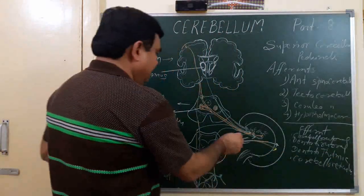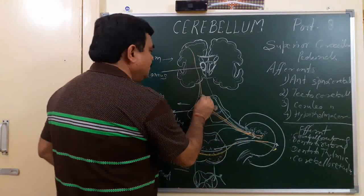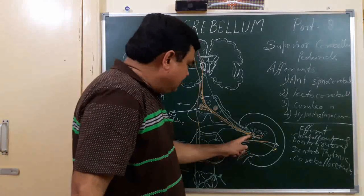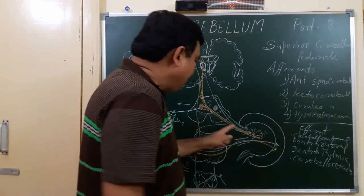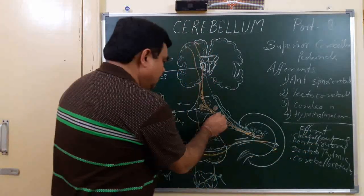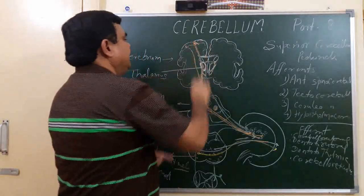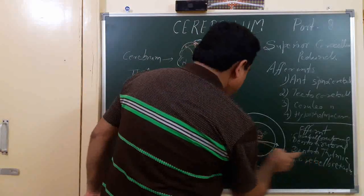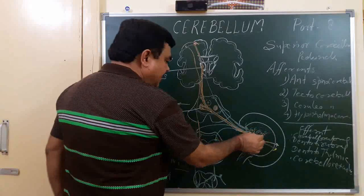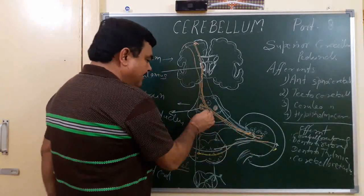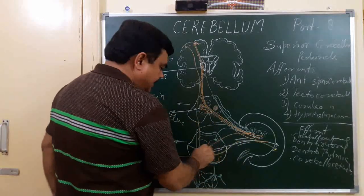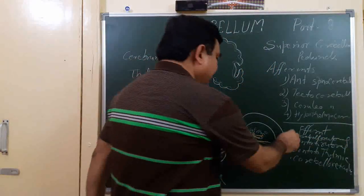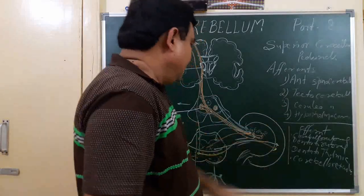There are also dentatothalamic fibers — from the dentate nucleus, fibers go to the thalamus, and from there to the cerebral cortex. The cerebellar rubral and dentatorubral fibers also project to the cerebral cortex. Additionally, there are cerebellar reticular fibers, which come from the cerebellum to the reticular formation.